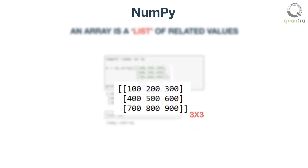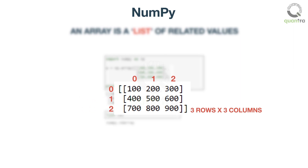The shape of this array is a three-by-three array — that is, it consists of three rows and three columns. The indexing of both these rows and columns begins from zero; that is, the three columns are indexed as 0, 1, 2, and the three rows are indexed as 0, 1, 2. For example, if we want to know the position of element 900 within the array, it lies at 2,2, and that of element 300 is 0,2.